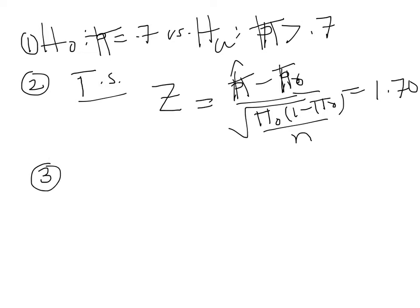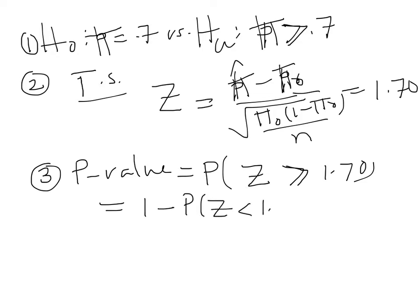Then in step 3 we calculated p-value. P-value is the probability z greater than 1.7, why greater? Because this is greater in alternative hypothesis. This is 1 minus probability z less than 1.70, and this number from the table was 0.9554, and that gave you the p-value of 0.0446.